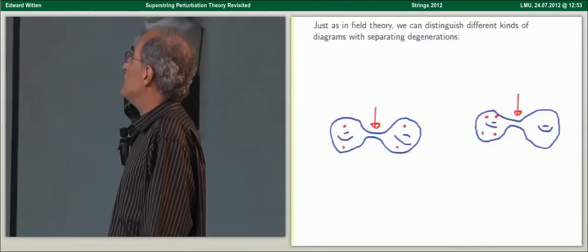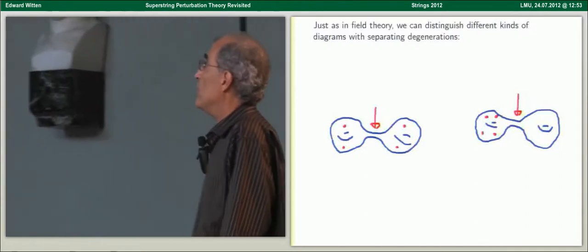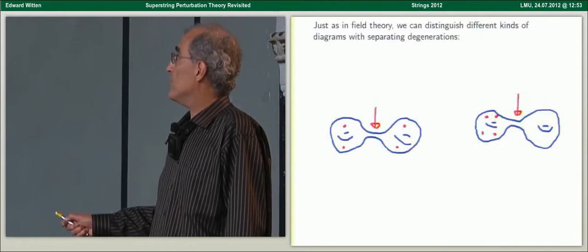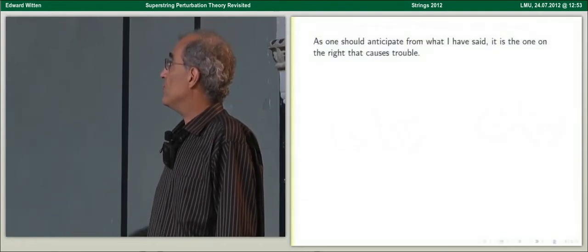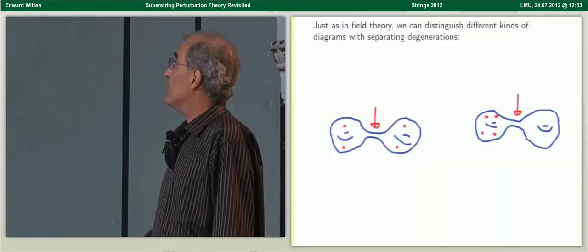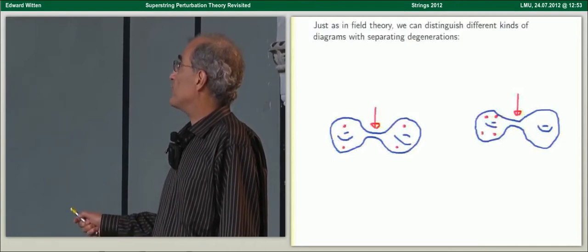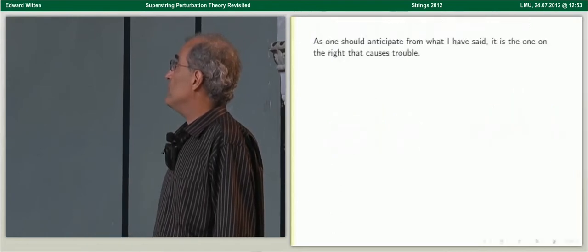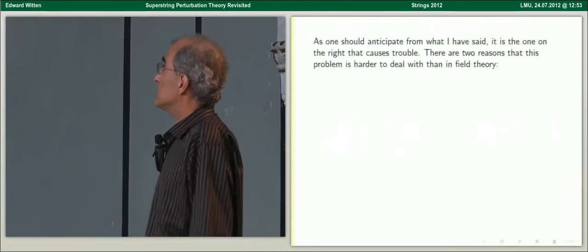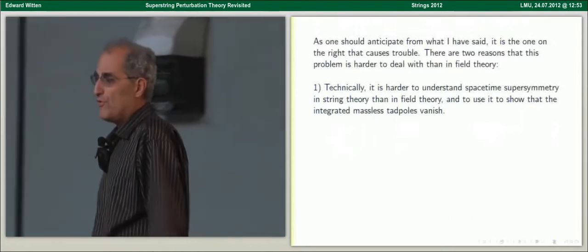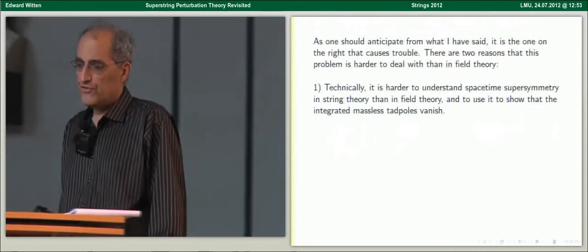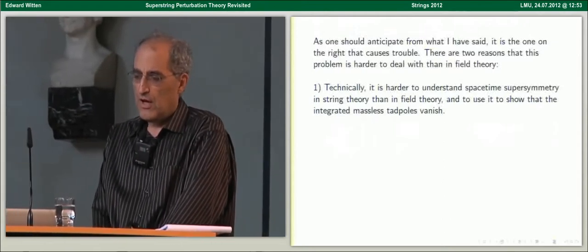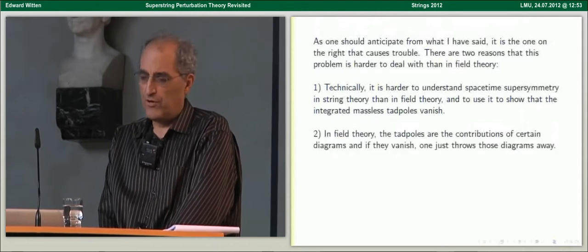Just as in field theory, we can distinguish different kinds of diagrams with separating degenerations. The red dot is an external vertex operator, and here are two different separating degenerations. From what I've told you, it's the one on the right — where all the external vertex operators are on the same side and the momentum flowing through the neck is zero — that's going to cause trouble. There are two reasons this problem is harder to deal with than in field theory. The first is that technically it's harder to understand spacetime supersymmetry in string theory and to use it to show that the integrated tadpole vanishes.